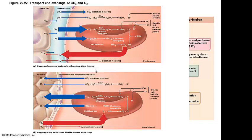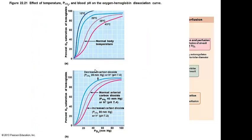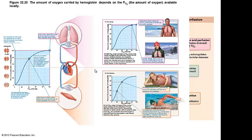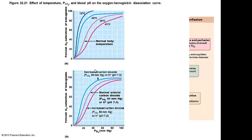Oxygen-hemoglobin dissociation curve. On pages 830 and 831, we see a discussion of oxygen dissociation. I can get on the ride, but I've got to get off. If my hemoglobin molecule can't let go of oxygen, it's not going to do me any good. If it can't pick up carbon dioxide, it's not going to do me any good. The dissociation curve looks at different factors that affect getting on and getting off the ride.